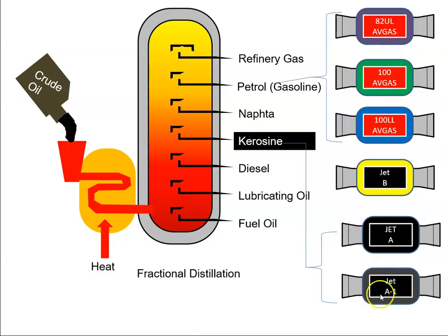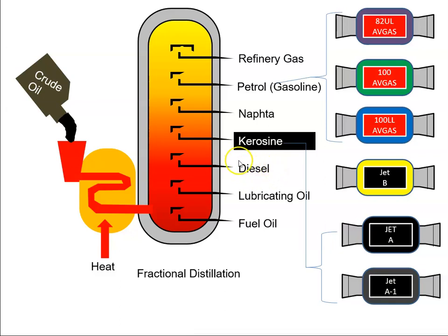In between we have Jet B, which is a blend of avgas and the kerosene-type fuels. There have been aircraft with diesel engines, but predominantly it's Jet A1 and avgas fuels that are used in aviation.